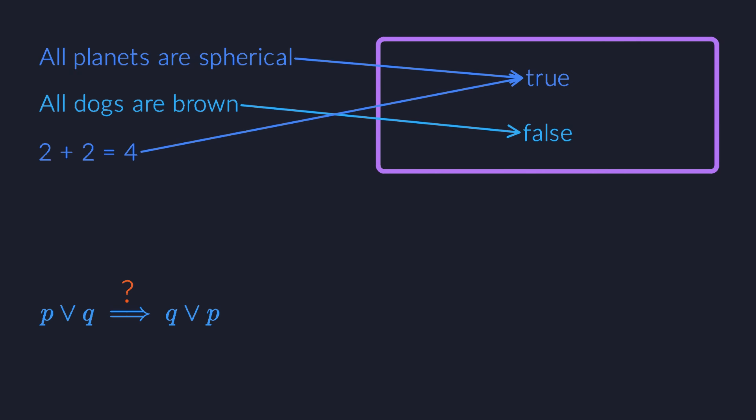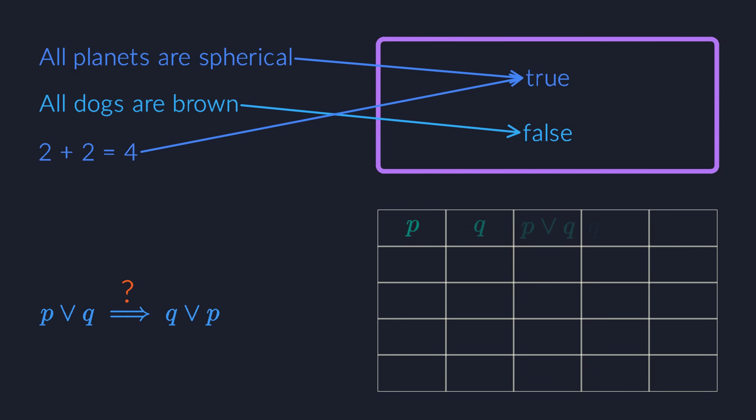The way to do this is to explore all possible mappings. The two variables, P and Q, can both be mapped to false or true, which gives us four different mappings to look at. We then use lookup tables to calculate the truth value for the implication. You will notice that its value is true for all possible mappings.